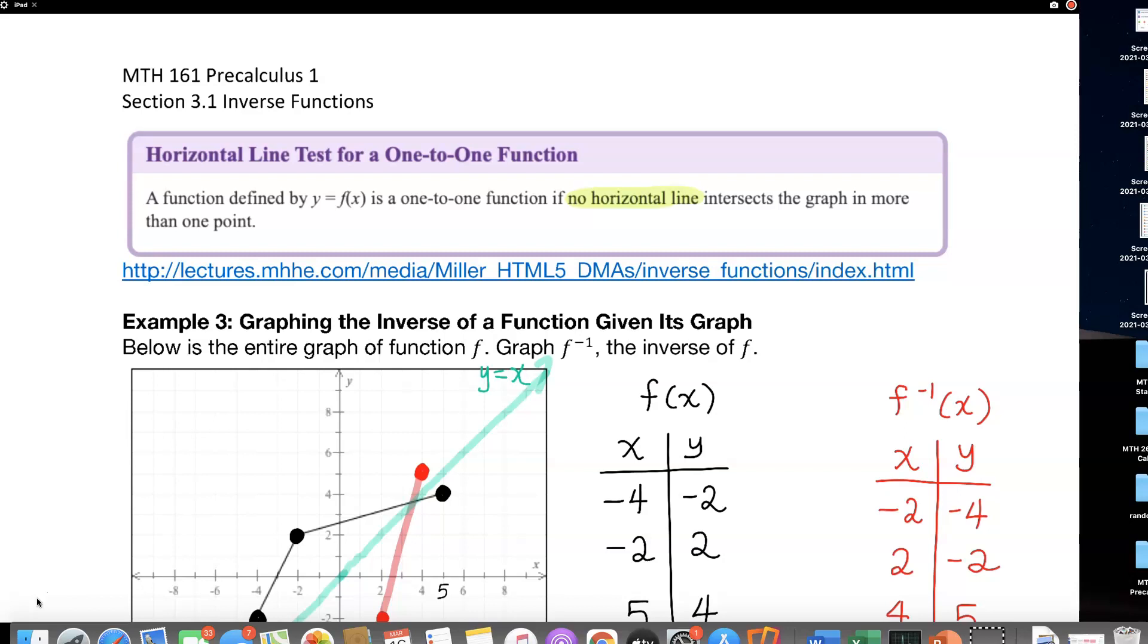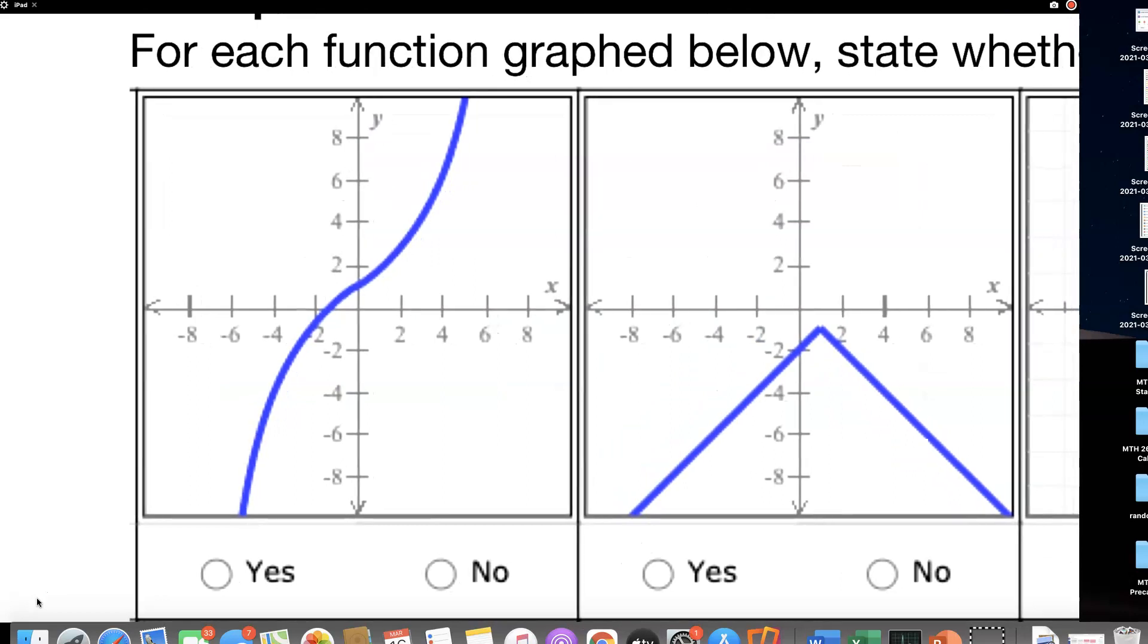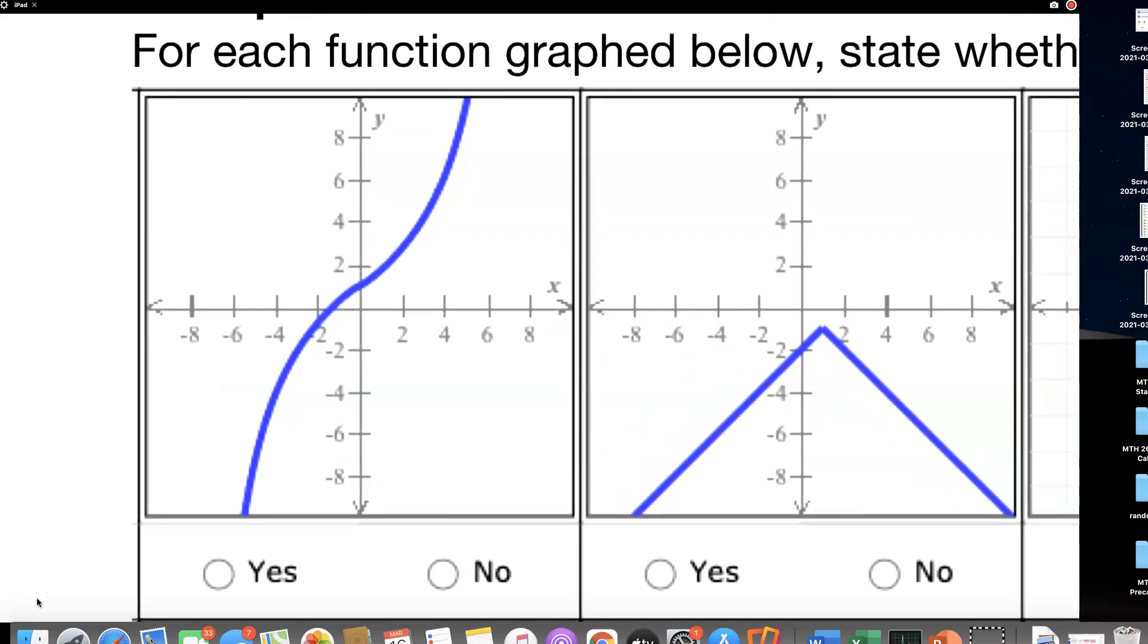But if it touches only one point in every horizontal line that you can draw, then it is a 1 to 1 function. So let's go down to example on this page right here. So let's start with this. So if I sketch a horizontal line, let me try to draw a dotted line right here. So here's the first horizontal line, ta-da! Just one point, right? Another horizontal line, just another one point. I can draw a horizontal line everywhere on this graph, and it will always touch one point of this curve. So is this a 1 to 1 function? Yes, it is. Yes.